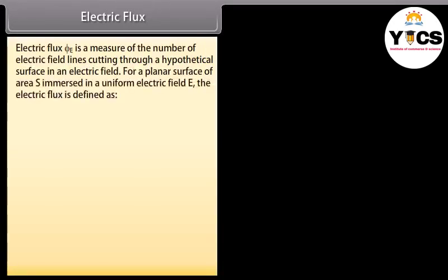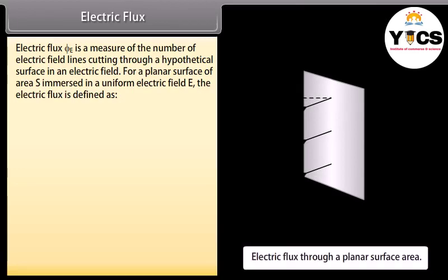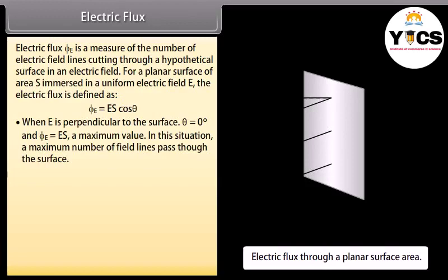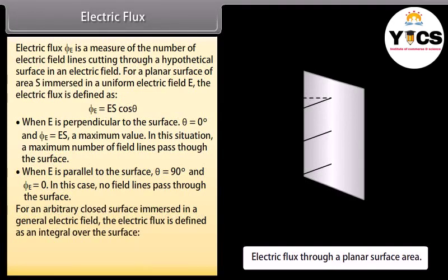Electric flux: Electric flux φₑ is a measure of the number of electric field lines cutting through a hypothetical surface. For a planar surface of area S in a uniform electric field E, φₑ = ES cosθ. When E is perpendicular to the surface, θ = 0° and φₑ = ES, the maximum value. When E is parallel to the surface, θ = 90° and φₑ = 0. For an arbitrary closed surface, electric flux is the integral of E cosθ over the surface. The SI unit of electric flux is N·m²/C.